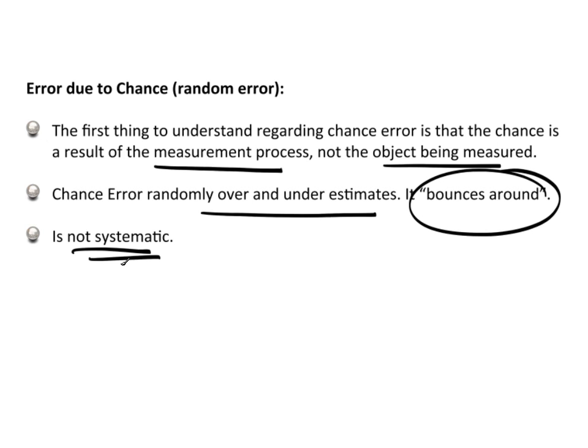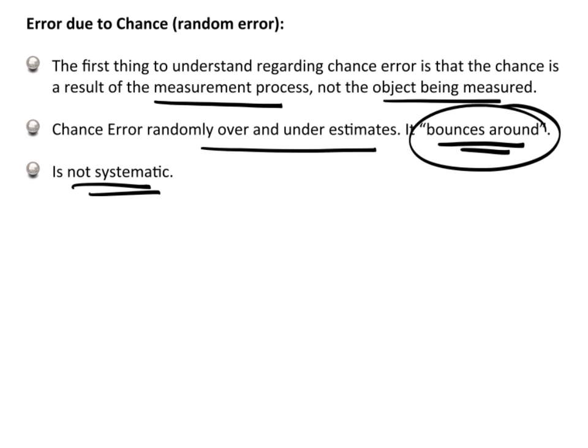In reality, because chance error kind of bounces around, I know that's not very scientific, but it really does describe it pretty well. The effect of random error on measurements, when you have a bunch of measurements, tend to cancel themselves out a little bit. Because some will be over, some will be under. And overall, the amount of error is not all that great. But we do want to do whatever we can to help control the chance error.